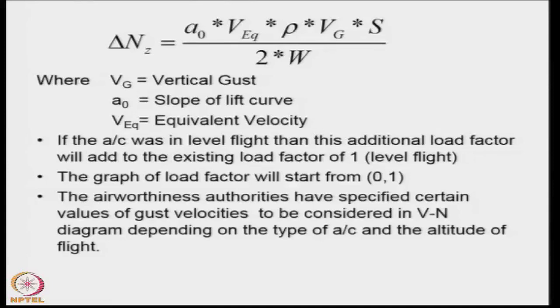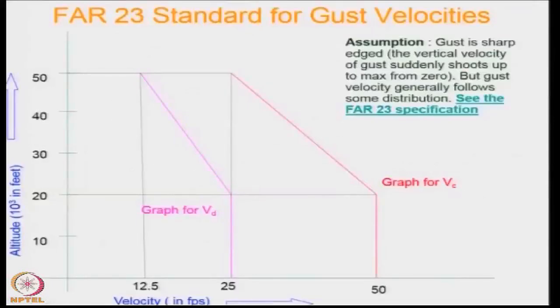Certain values of gust velocities have to be considered based on the historical information available with the airworthiness agencies. These values depend upon the altitude at which you are flying. For example, if we look at the FAR 23 standard for gust velocities, we see that for altitude up to around 20,000 feet, the value of gust velocity acting on the design diving speed is expected to be 25 feet per second.